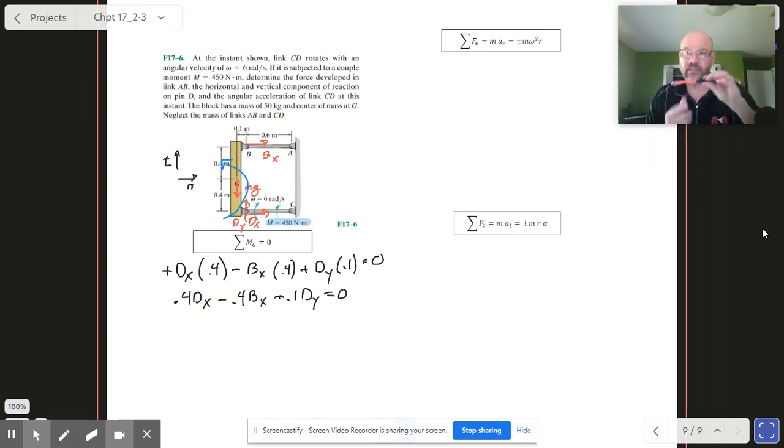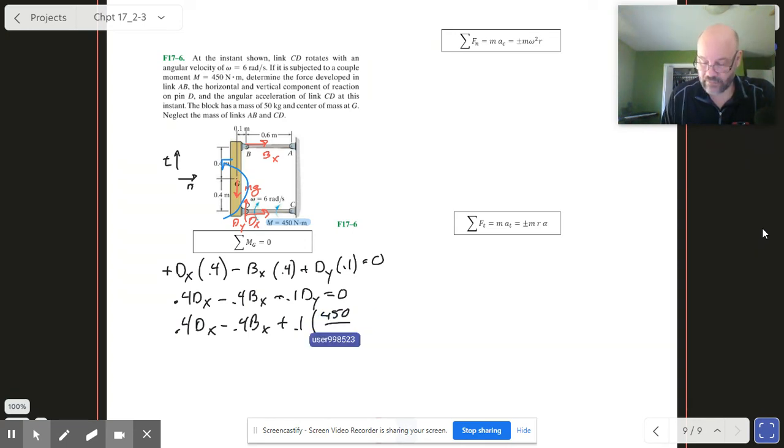Now let's figure out what Dy actually is. Dy comes from the moment. That bar is lifting, the bar is lifting. Normally when we calculate moment we say we've got a force and a radial arm, and that radial arm and the force r times f gives us our moment, but we're going to go backwards with it this time. So what we're going to do here is we're going to say we've got 0.4 Dx minus 0.4 Bx plus 0.1 and we're going to divide the moment which is 450 by the radial arm which is 0.6, set that equal to 0.